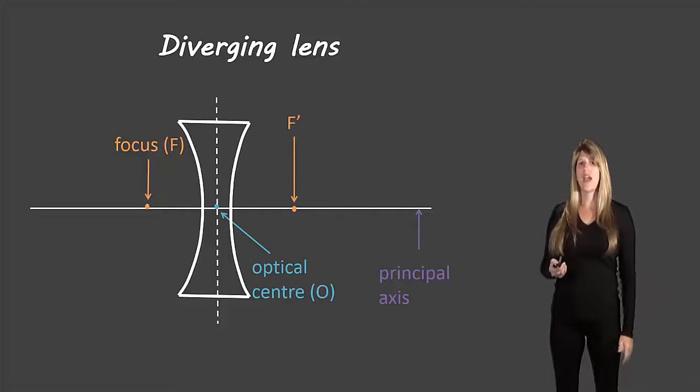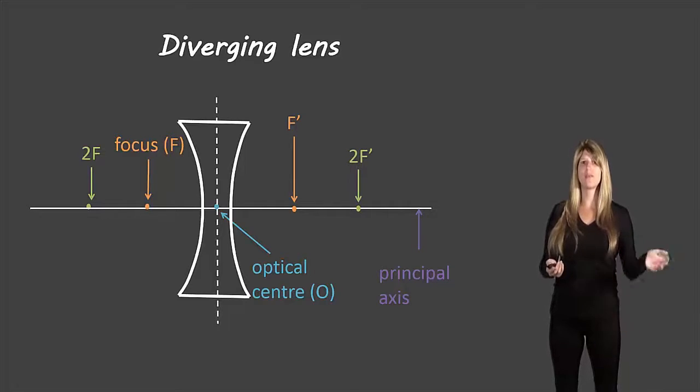We also have an F prime on the opposite side of the lens. It's the same distance from the optical center as is F. And then we have 2F double the distance from the optical center to F and 2F prime double the distance from the optical center to F prime.